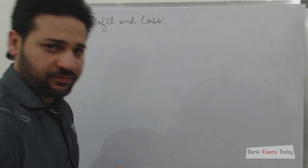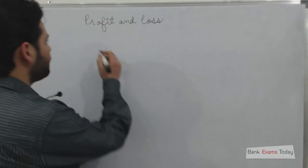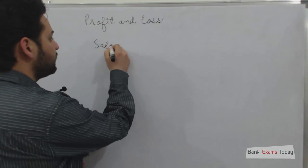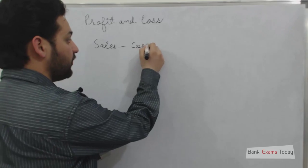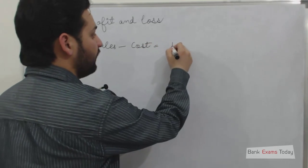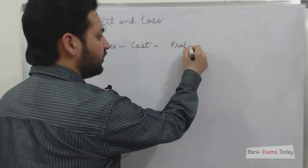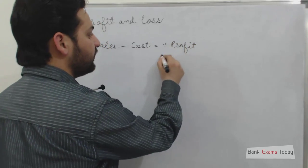First of all, let me explain what is Profit and what is Loss. It is simply sales minus cost. Sales price minus cost price is equal to, if it is positive then it is profit, if it is negative then it is loss.